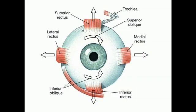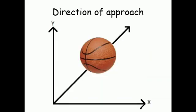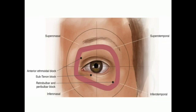The second important factor is the direction of approach of the projectile. The more oblique the direction, the less likely it is to cause a penetrating injury. The more perpendicular the direction of approach, the more likely a penetrating injury. The orbital volume gives good protection superiorly and nasally, but the inferior temporal part of the globe is most susceptible to injury.